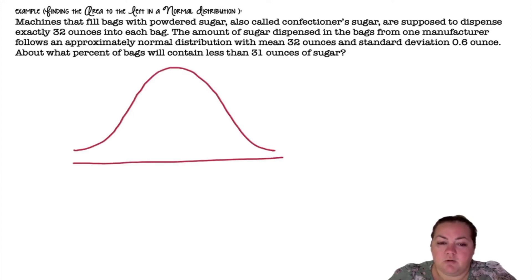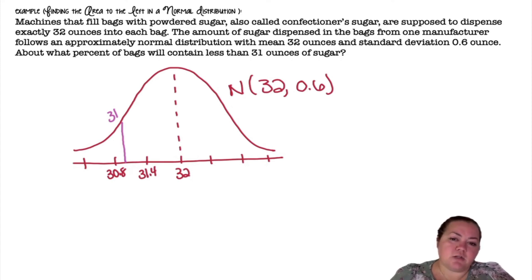I'm going to start by drawing my normal distribution. It's a normal distribution with a mean of 32 ounces and a standard deviation of 0.6. So 32 goes in the center. I'm going to go three standard deviations above, three standard deviations below. I wanted to go to 31. Well I know 31 is going to be below, so I went two standard deviations below so that I could get an idea of where 31 would be. And then they wanted less than 31 ounces, so I'm shading below it, everything to the left.